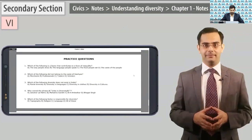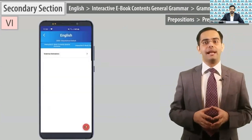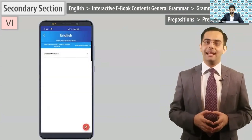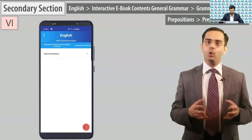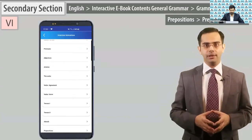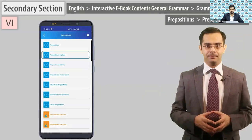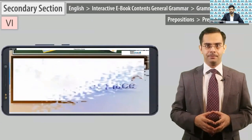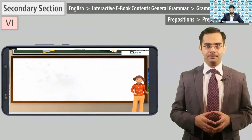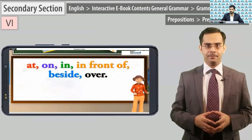Now open the English subject. First, the grammar section. This section is designed so that children can get clarity of grammar. Let's use prepositions for example. Go to interactive ebook content for general grammar. Open grammar animations, open prepositions, and play 'Prepositions of Place.' Let us now understand about prepositions of place. Prepositions like at, on, in, in front of, beside, and over tell us where something happens.